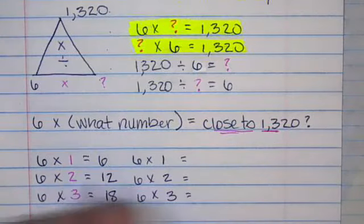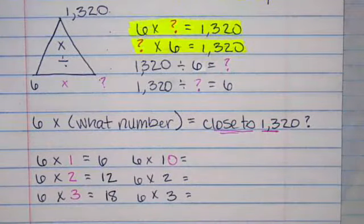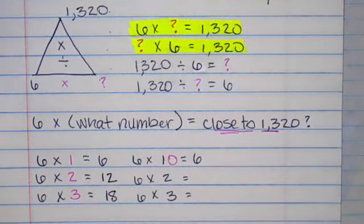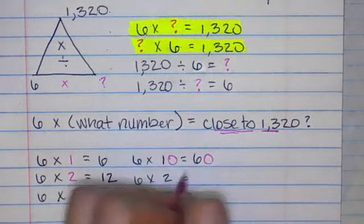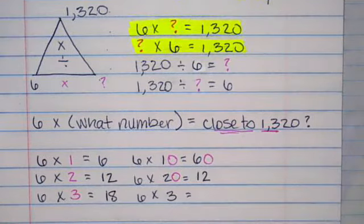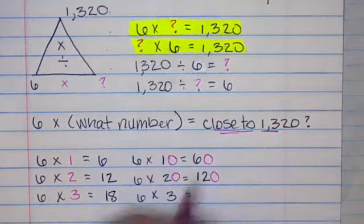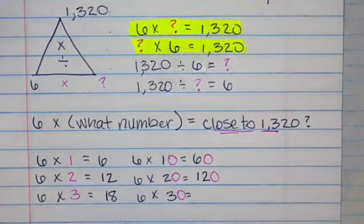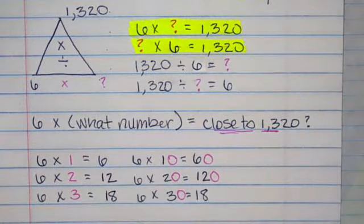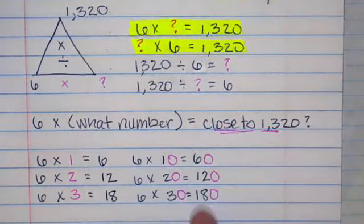Six times 10 equals 60. Sorry. Six times 20 would be six times two is 12 plus one zero. That's 120. I'm getting kind of closer. Or I could do six times 30. Six times three is 18, and I'm going to add one zero. 180.